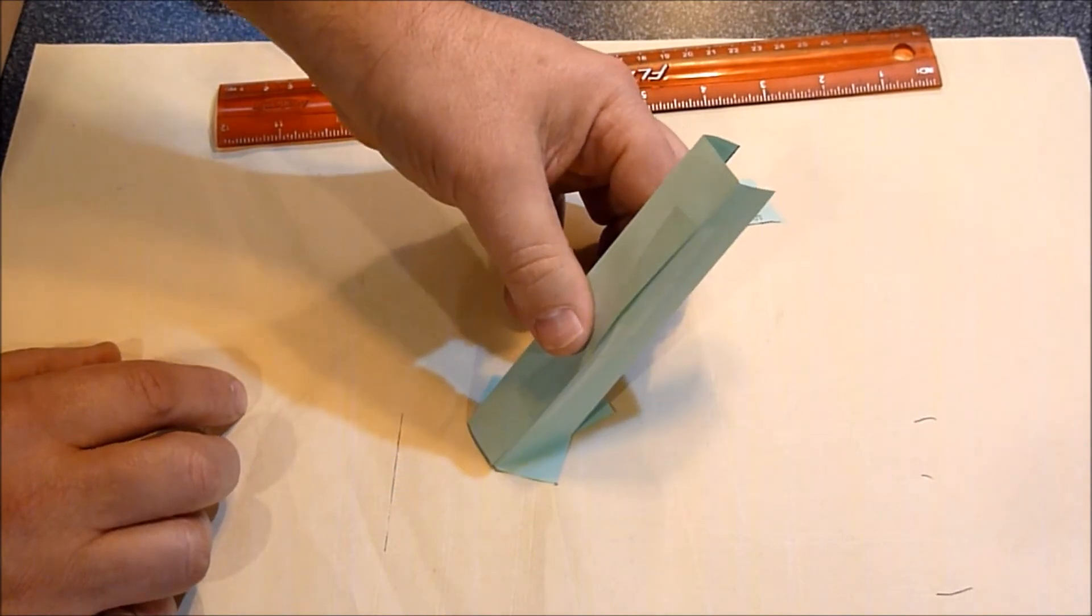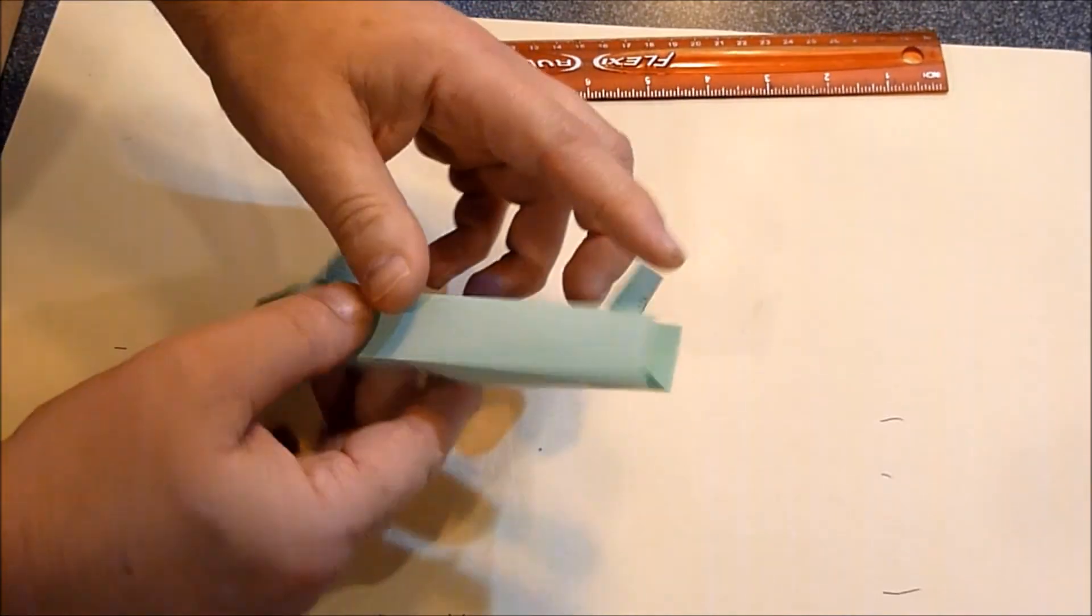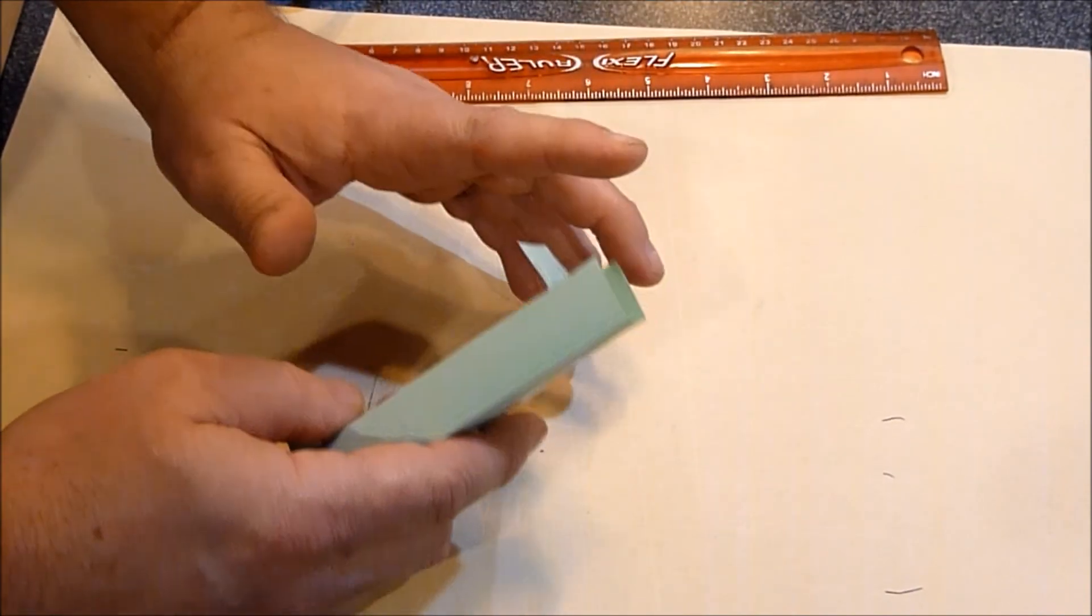The reason why you fold out the tabs is so that it sits flat on the table like that. This part here, you put that around your beam.